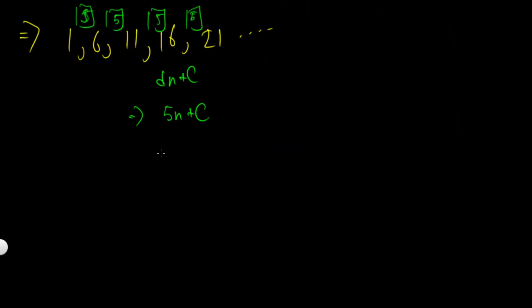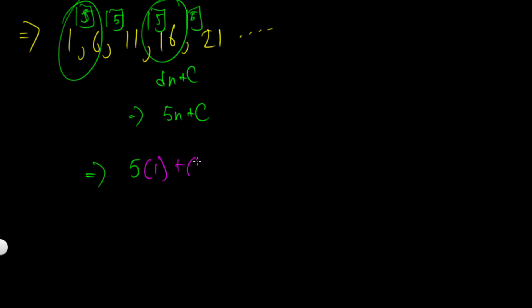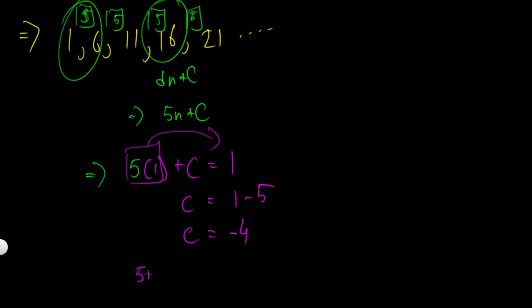Now I need to make an equation for any term to find the value of c. I'll use the first term and the third term to show you get the same answer. For the first term: 5(1) + c = 1, because the first term is 1. Therefore c = 1 − 5 = −4. So the nth term formula is 5n − 4.